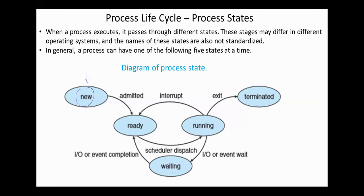The process is in the new state when it's being created. The process is in the ready state when it's waiting for the processor. Ready processes are waiting to have the CPU allocated to them by the operating system so that they can run. Processes may come into this state after a new state or if they were running but interrupted by the scheduler to assign the CPU to other process or by completing an I/O operation.